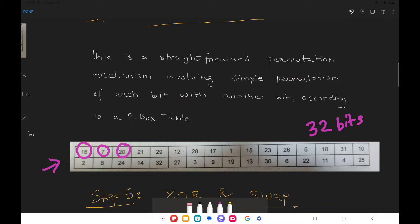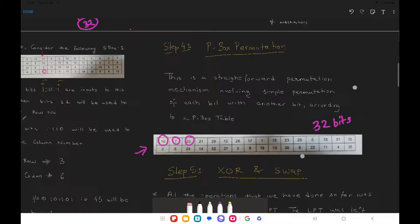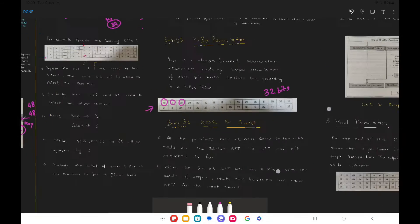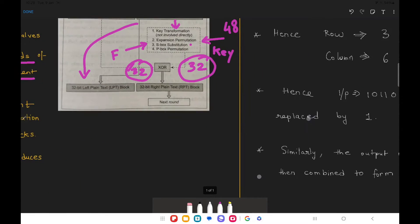So this is basically a transposition or we can say a permutation of the values which are already present inside that RPT. So once we are done with this step we will be having our final 32-bit RPT in front of us.